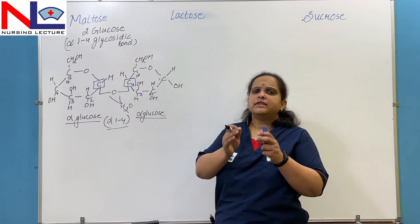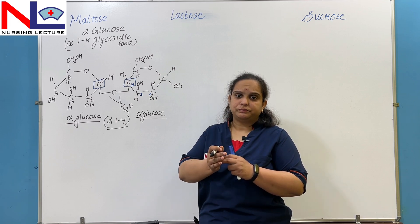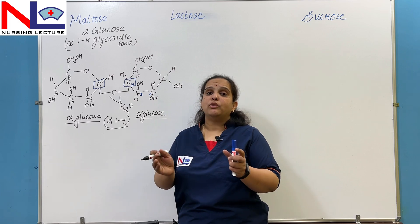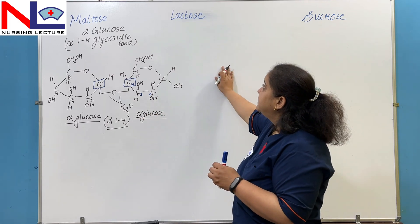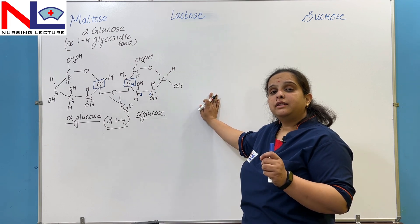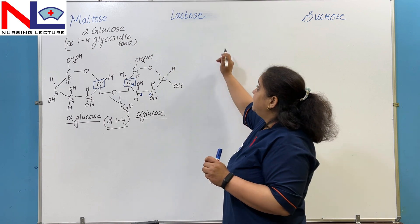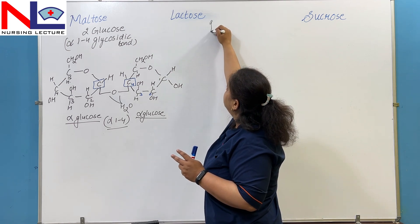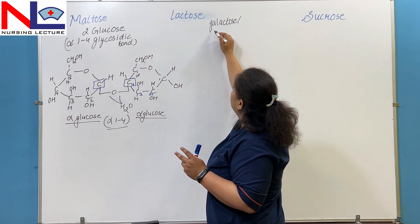When starch and glycogen molecules get broken down and hydrolyzed, they yield many molecules of the disaccharide maltose. Next we will look at lactose. Lactose is the sugar unit basically present in milk, and it is made up of two sugar molecules — one is galactose and one is glucose.